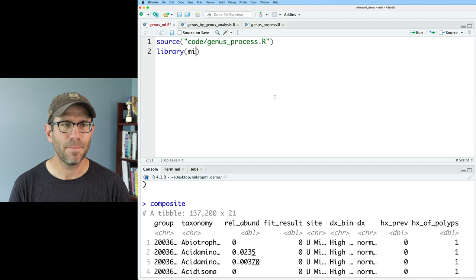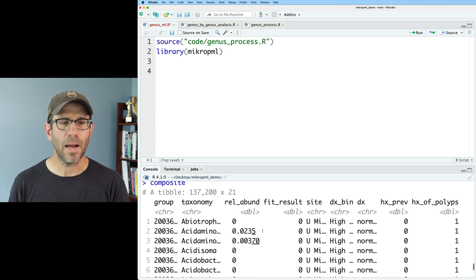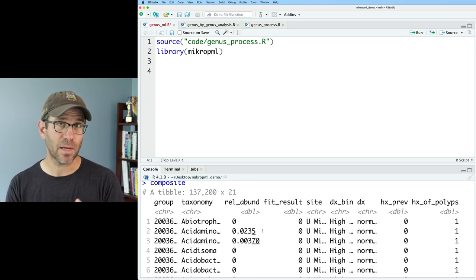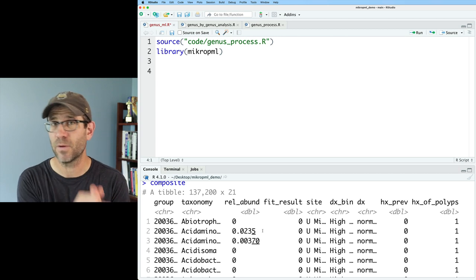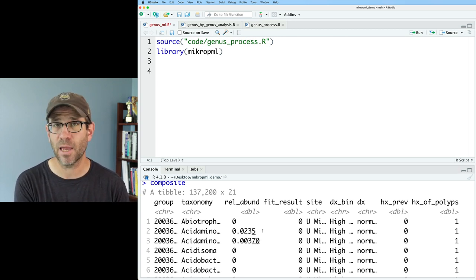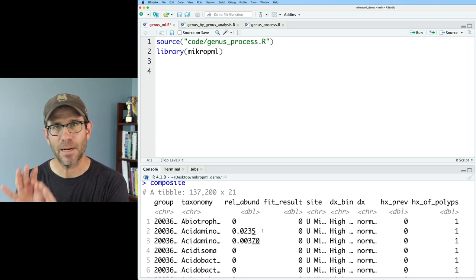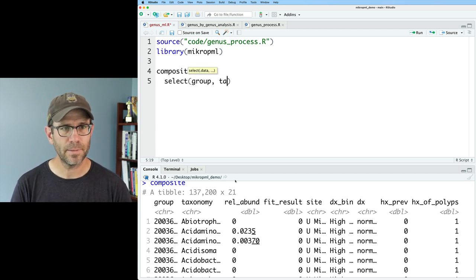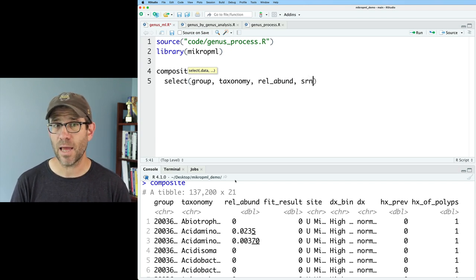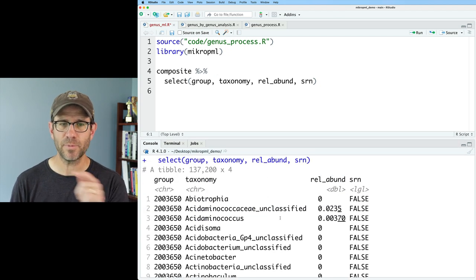And then I've got my genus_ml.R script separately. And I will go ahead and put this source code genus_process.R into my genus_ml.R. And so again, running that loads and gets me this composite data frame. I then get my data frame that has the group or the sample ID from each participant in the study, the taxonomy, the relative abundance, the fit result, which is the amount of blood in the stool, and a bunch of other metadata on all of the subjects.